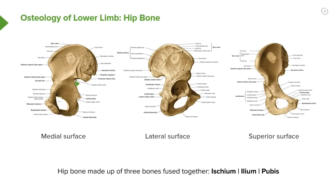Here we have a medial surface view, and here would be the anterior aspect. We've got the pubic symphysis surface here and the posterior surface here. On this side it's a lateral surface, so we have the anterior aspect here and the posterior aspect here. And this is a superior surface looking down — anteriorly would be here, posteriorly would be here, and this will be the medial surface.